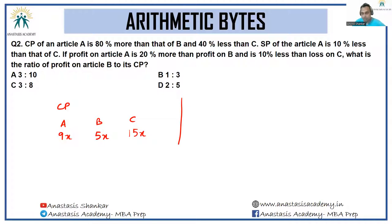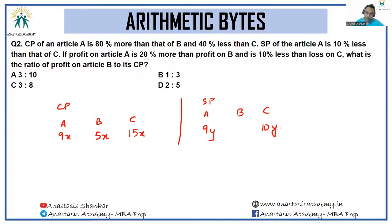The SP of article A is 10 percent less than that of C, so SP of A is 9y and SP of C is 10y. The profit on article A is 20 percent more than the profit on B, and 10 percent less than the loss on C — meaning C has a loss.